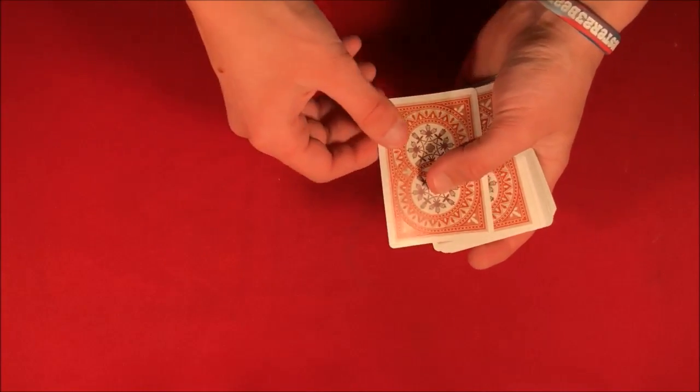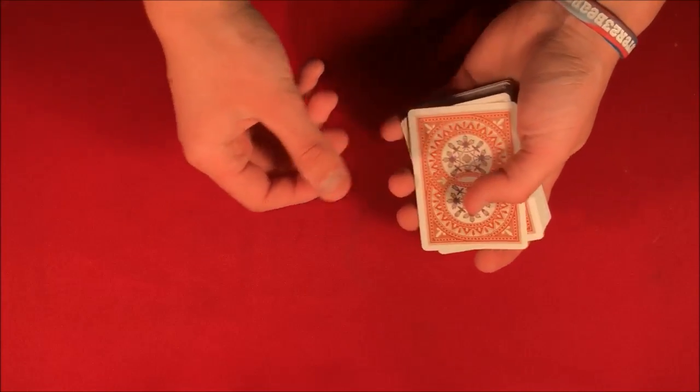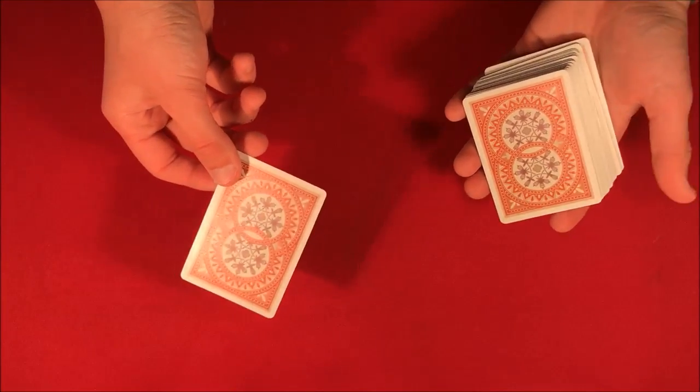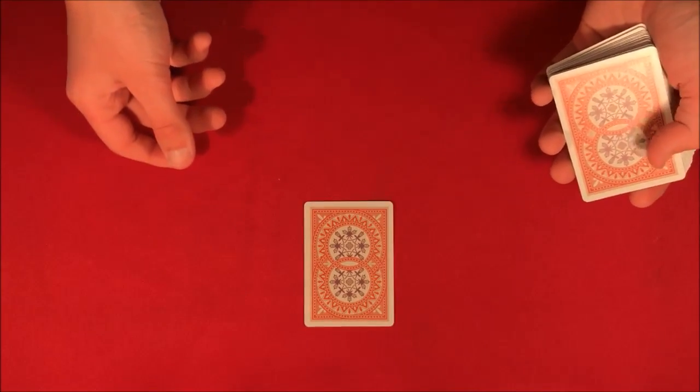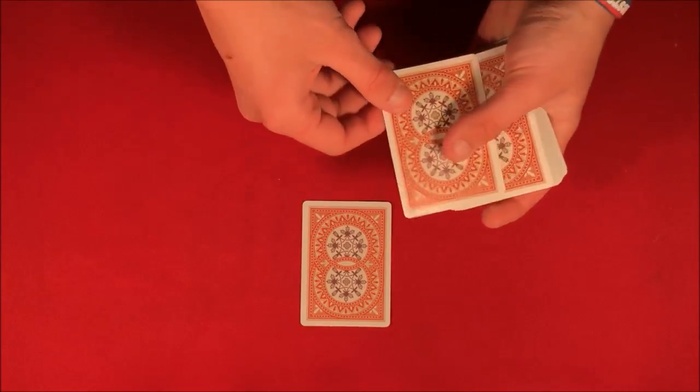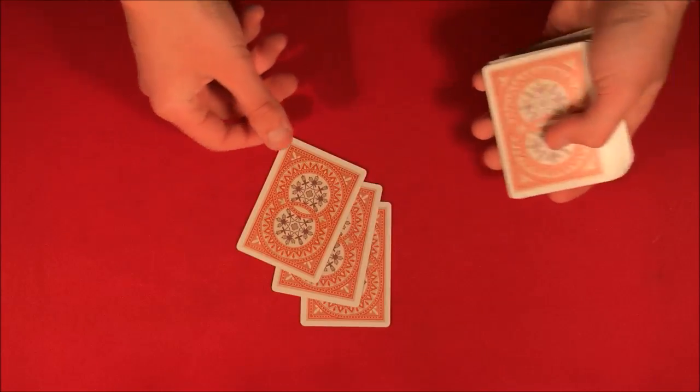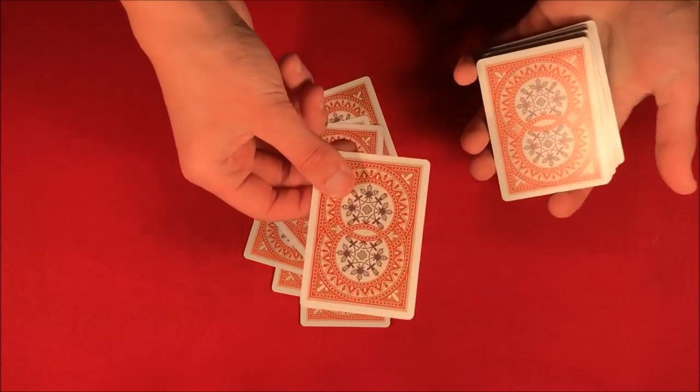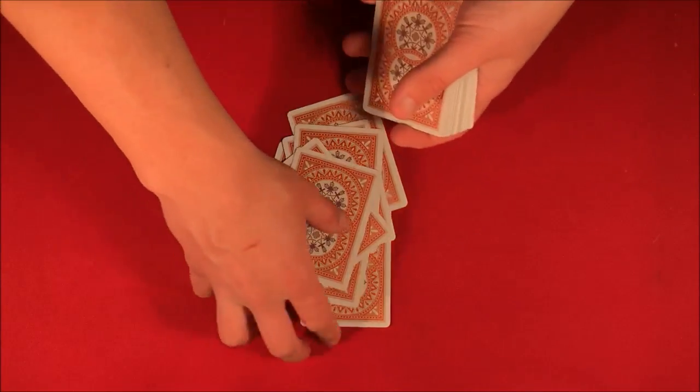Let's say the spectator chose eight. Penn would start off by showing them what to do. Penn would be like, alright, you know what, all you do is you set number eight, you just deal out eight cards. So in this case we have three, four, five, six, seven, and then that eighth card would be yours.